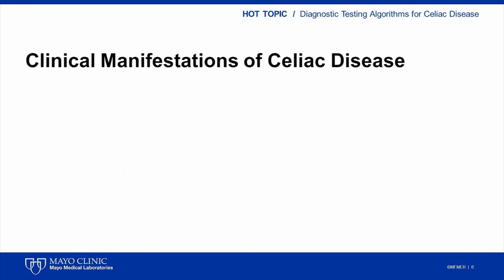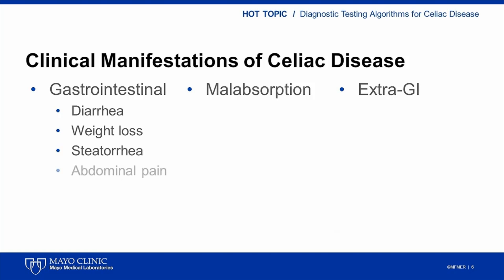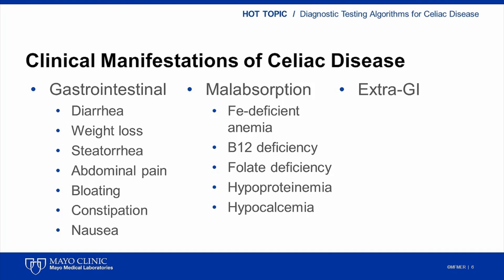The clinical manifestations associated with celiac disease can be classified as gastrointestinal, malabsorptive, or extra-gastrointestinal. Gastrointestinal symptoms include diarrhea, weight loss, steatorrhea, or abdominal pain, just to name a few. Because of the villus atrophy, patients with celiac disease may not be able to absorb nutrients from their food. As a result, patients may show symptoms of malabsorption, including iron deficient anemia, various vitamin deficiencies, hypoproteinemia, or hypocalcemia. Young children may even present with a failure to thrive.